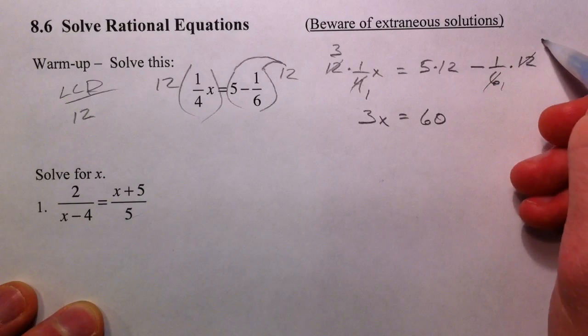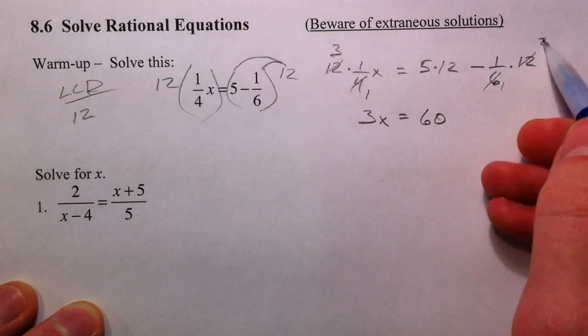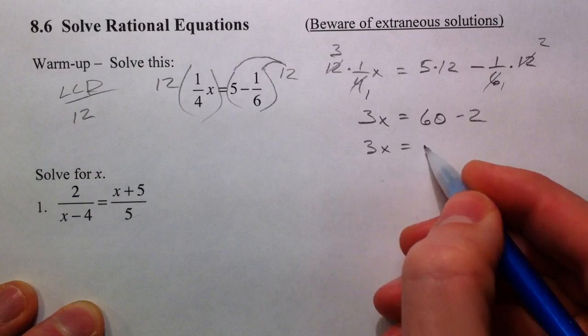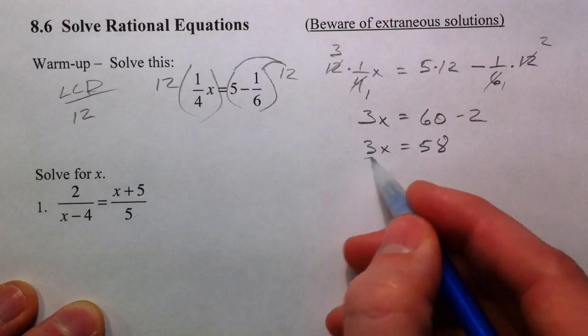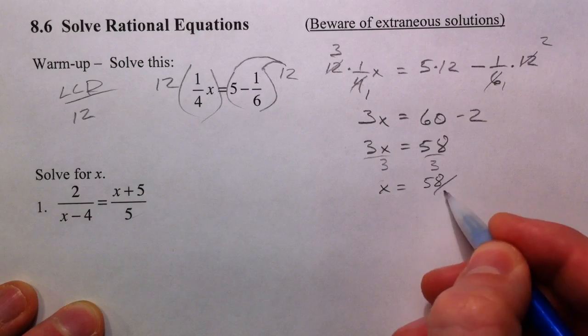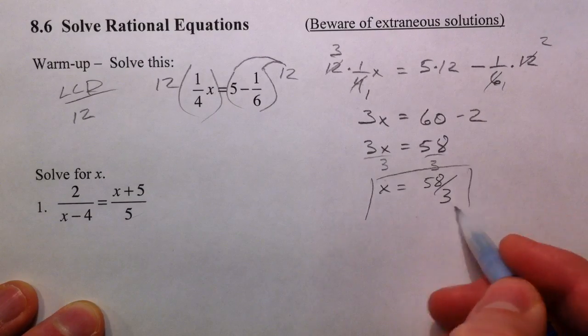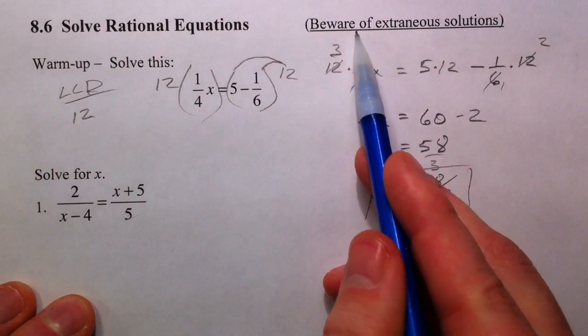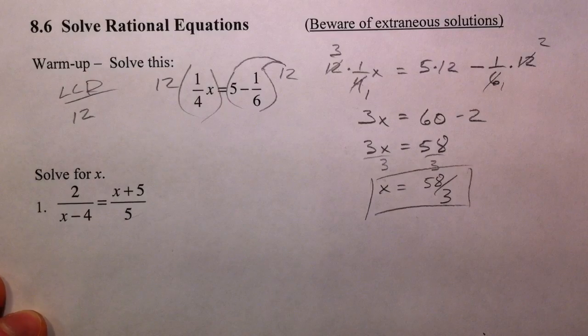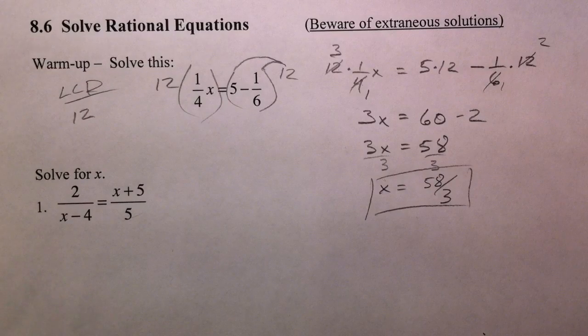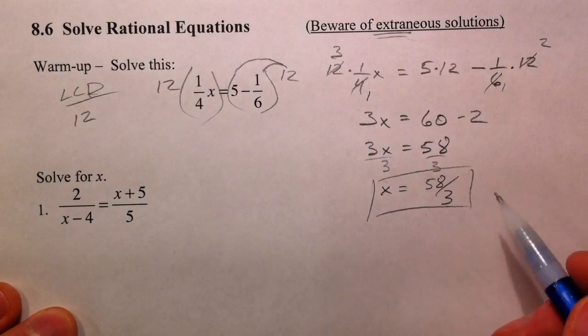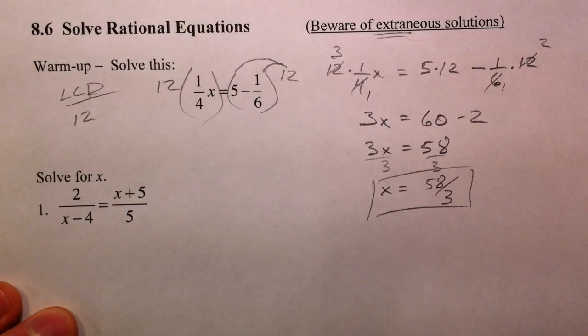Divide both sides by 3, x equals 58 thirds. We got a note up here to be aware of extraneous solutions. We'll actually get an extraneous solution in a later example, but those are just when you get an extra answer that's wrong, an extra erroneous answer that comes as a problem of you can't divide by zero.